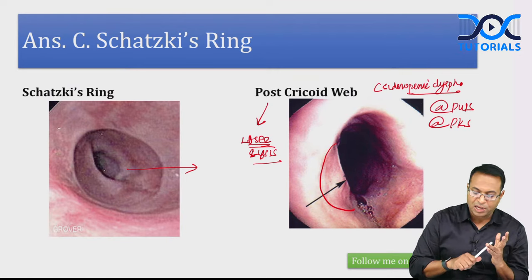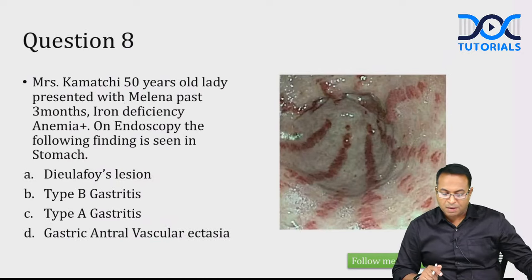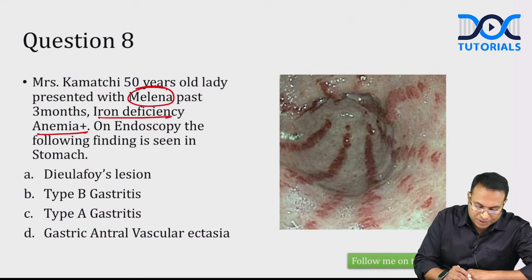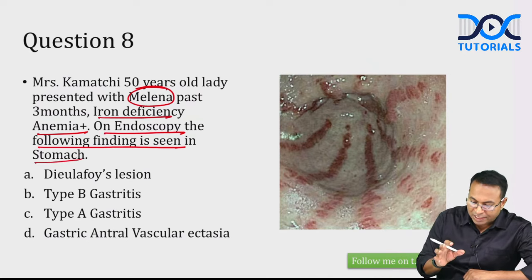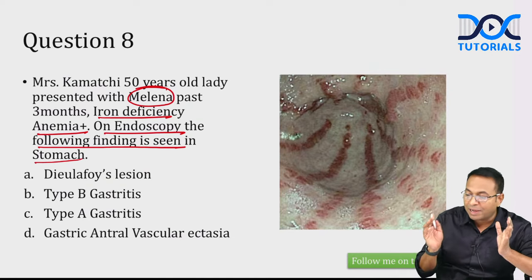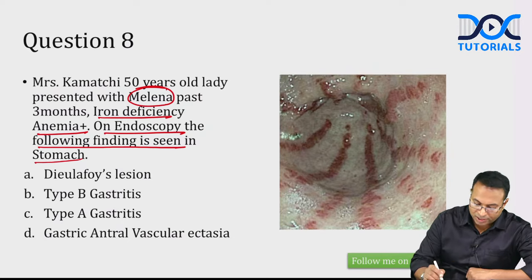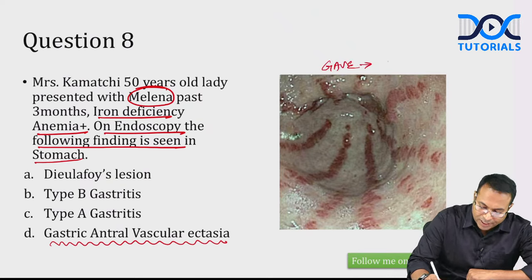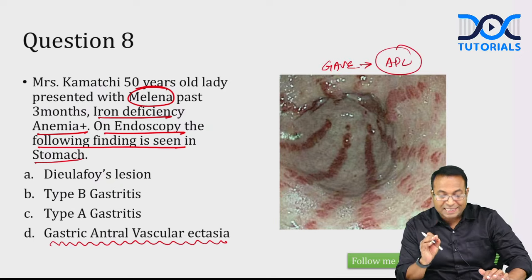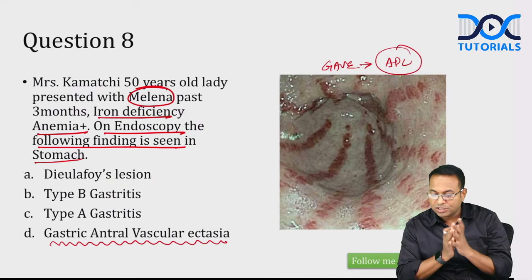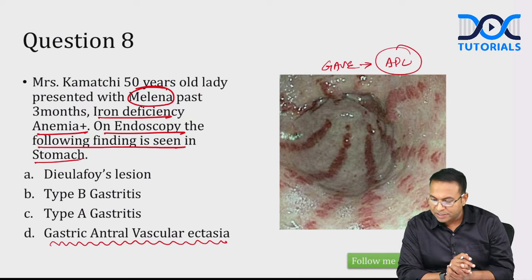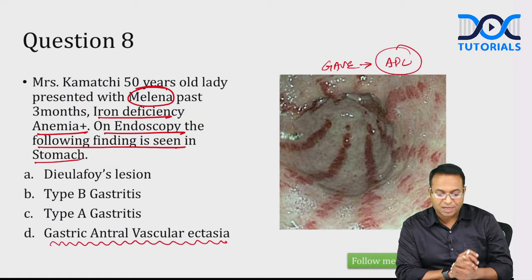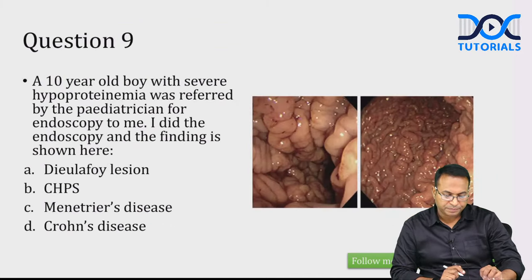Sideropenic dysphagia is also known as Plummer-Vinson syndrome or Patterson-Kelly syndrome — presenting with iron deficiency anemia, koilonychia, and post-cricoid webs. Mrs. Kamachi, 50 years, presented with melena and iron deficiency anemia. Endoscopy shows a watermelon-like appearance of the stomach, also known as gastric antral vascular ectasia (GAVE). Treatment is APC — argon plasma coagulation of the ectatic vessels.